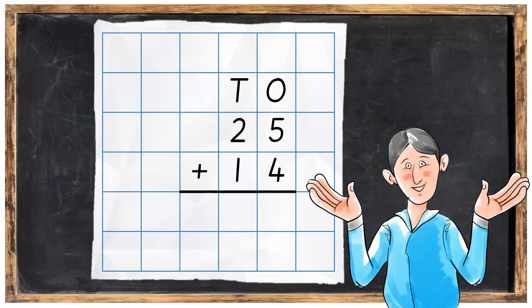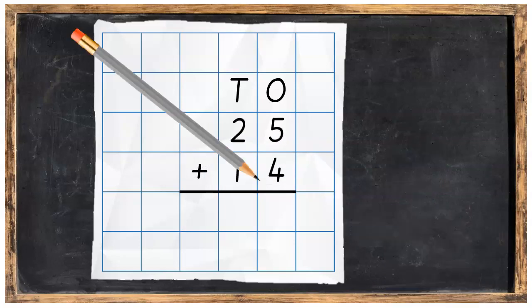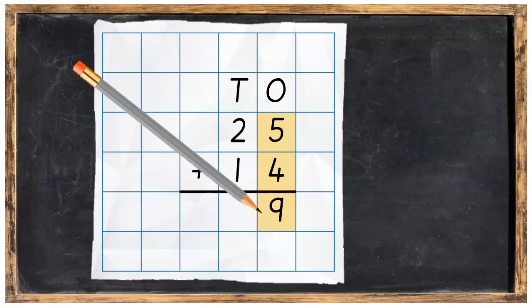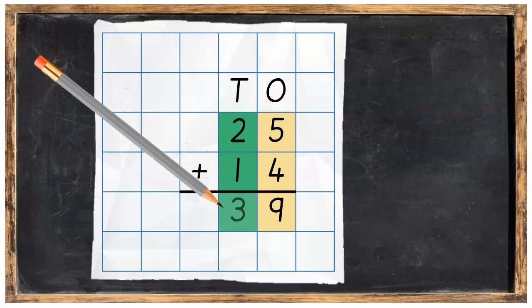And that's how we do any addition sum. It doesn't matter if the numbers on top are bigger or smaller. We add the ones first. So five plus four makes nine. And then we go over to the tens. We had two plus one makes three.